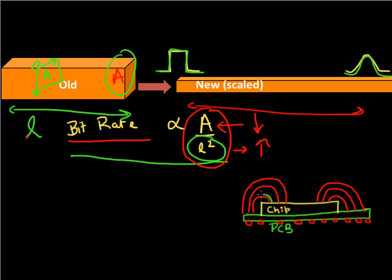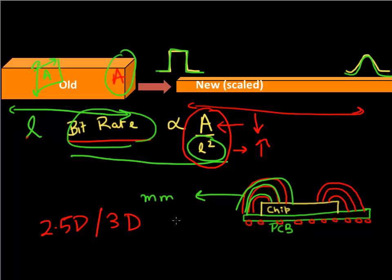Using packages which use wire bonds, these wire bonds can be in the millimeter scale, and they again tend to limit the overall bit rate that can be achieved. So going to 2.5D or 3D enables significant reduction in these lengths of these interconnects, and that's another driver to improve the overall system performance.